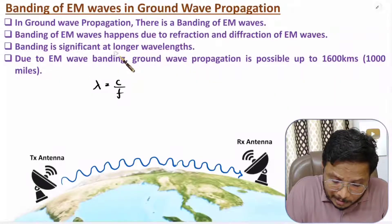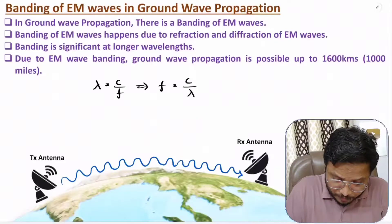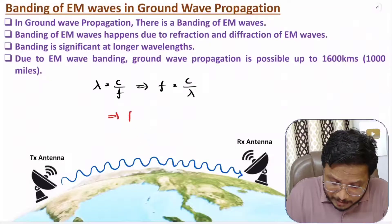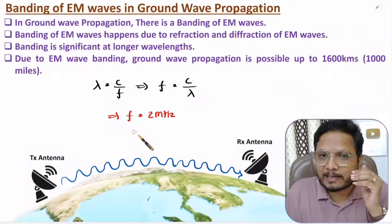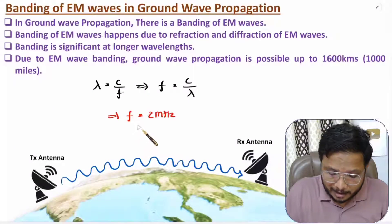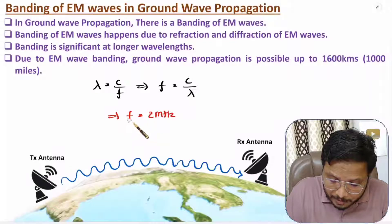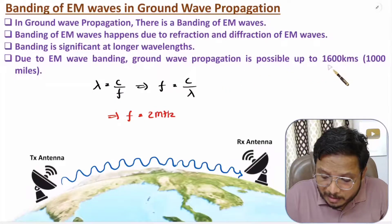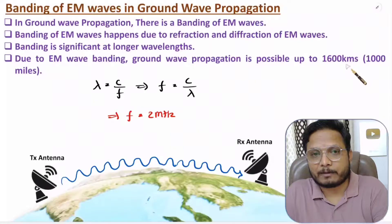Wavelength λ = C/F. For significant bending, wavelength should be longer, which means frequency should be lower. Ground wave propagation is therefore limited to frequencies up to 2 megahertz. Bending happens because of refraction and diffraction, and is possible at longer wavelengths only. With ground wave propagation, communication is possible up to 1000 miles, or approximately 1600 kilometers.